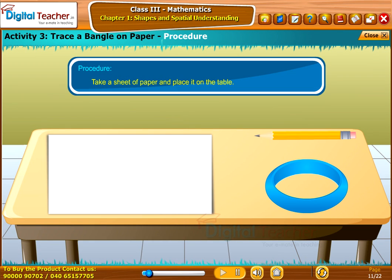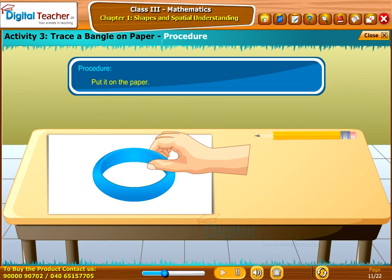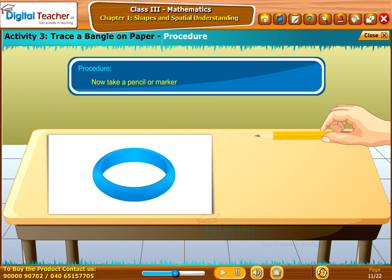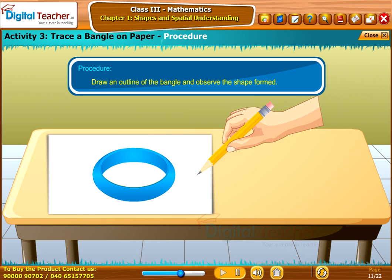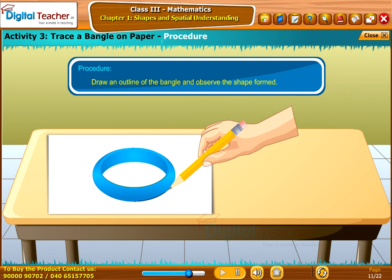Take a sheet of paper and place it on the table. Now take a bangle. Put it on the paper. Now take a pencil or marker. Draw an outline of the bangle and observe the shape formed.